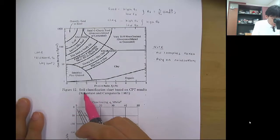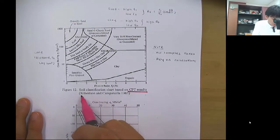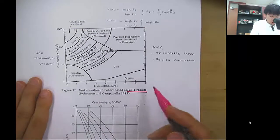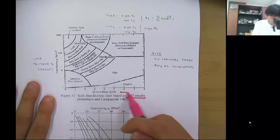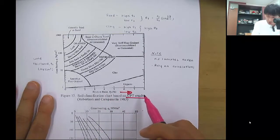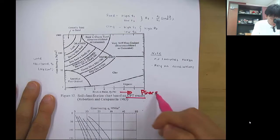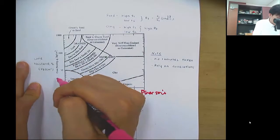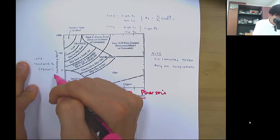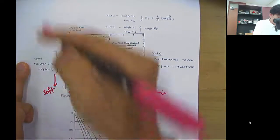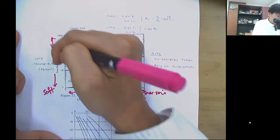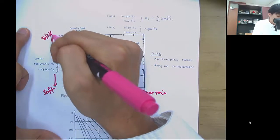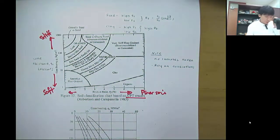Figure 12 shows the soil classification chart based on the CPT result by Robertson and Campanella. This is a pretty useful chart. You can see the friction ratio as you go to the right side, it's more like finer soil. Here it's coarser soil. For the QC, the cone resistance, it means that it is soft, and as the cone resistance increases, it's strong or stiff soil, or coarse soil. Here it's gravel and sand and coarse sand.